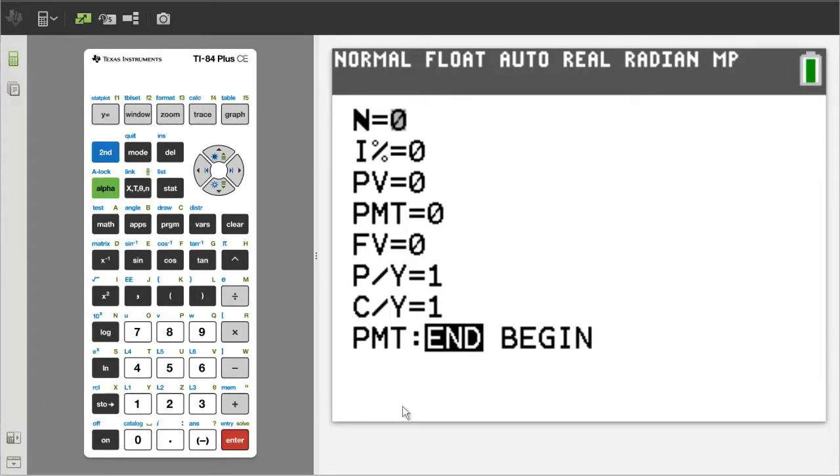These are the variables for Time Value of Money problems. N is for the total number of times that the money is compounded.